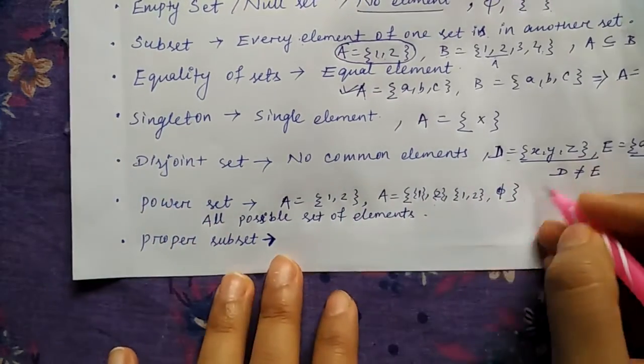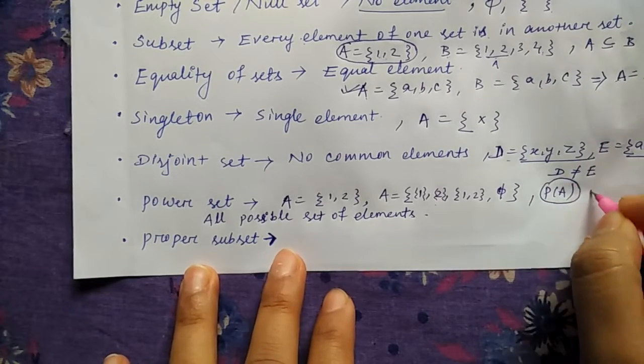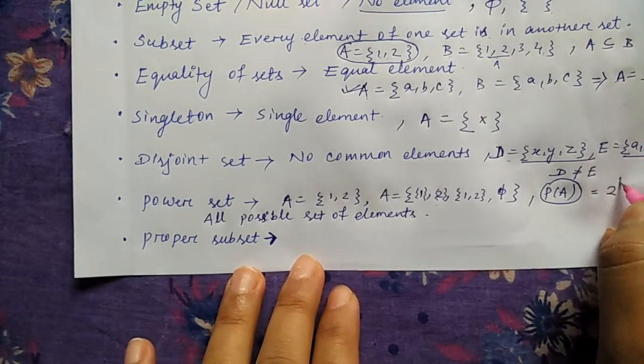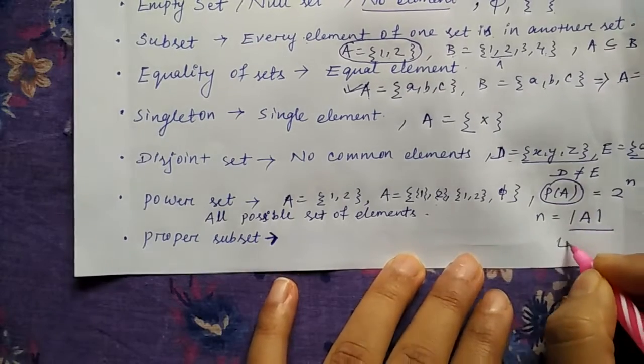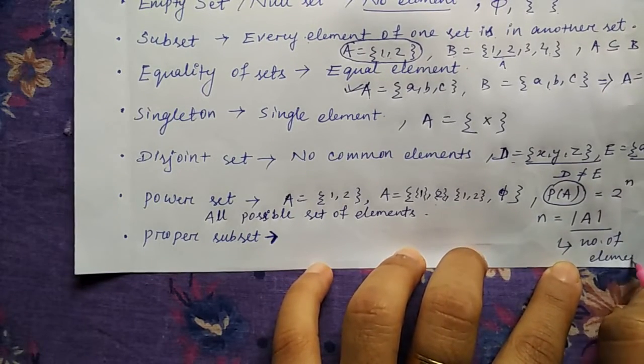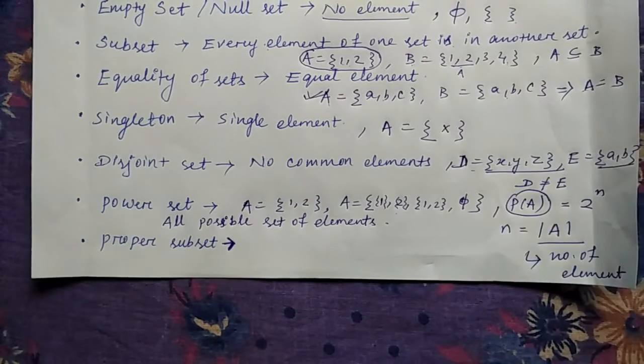That means A can be {1}, {2}, {1, 2} together and phi - it's four different sets. So that is called as power set of A. And power set is denoted by P(A). And there is a formula that is 2 to the power n where n is the number of elements present in A. So if I'm writing it like this, it means number of elements. I'll explain it to you in the next video properly.